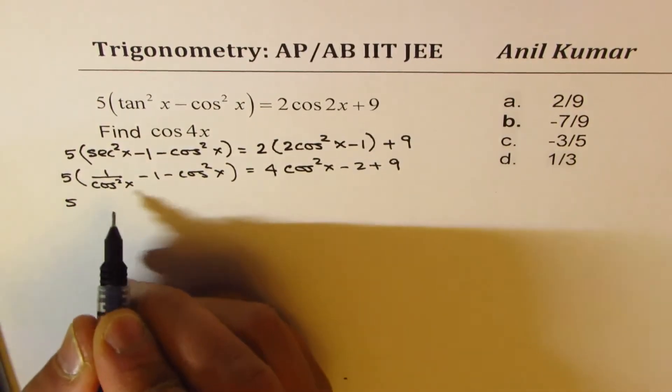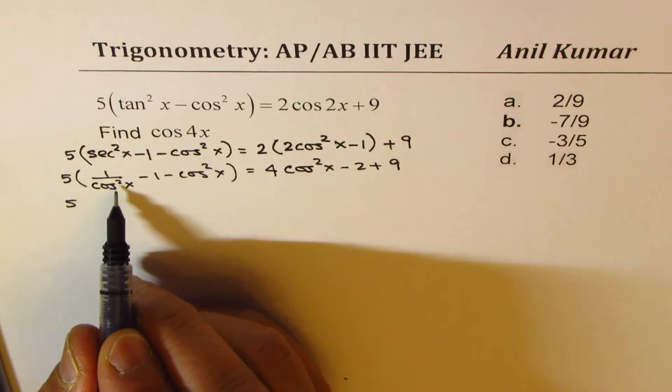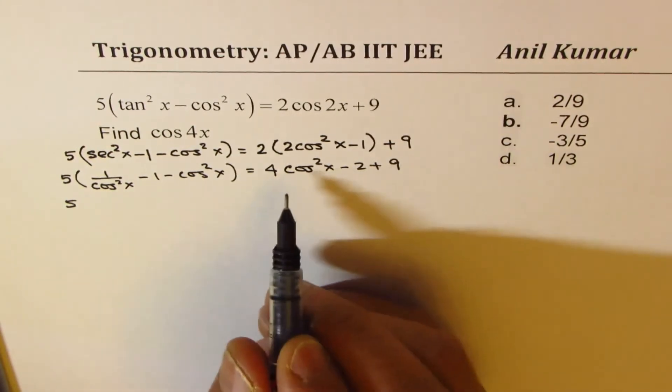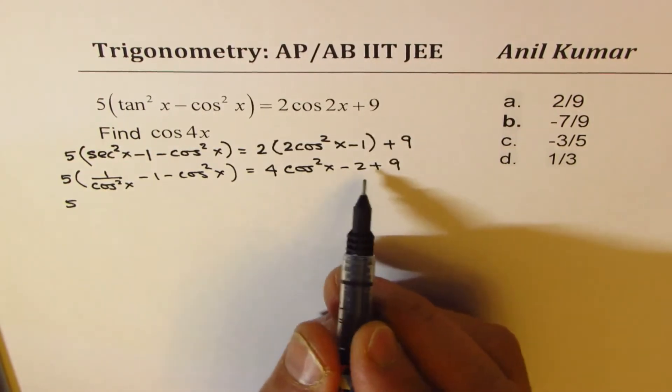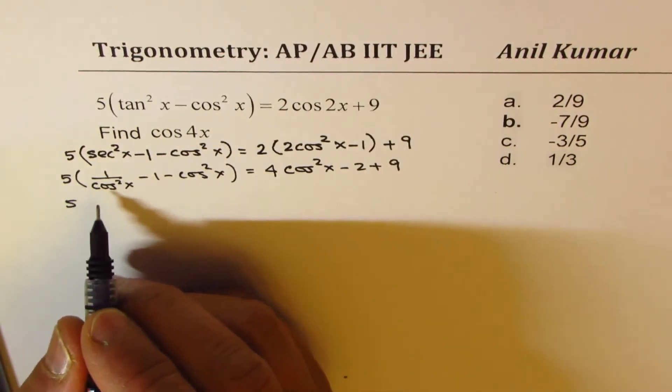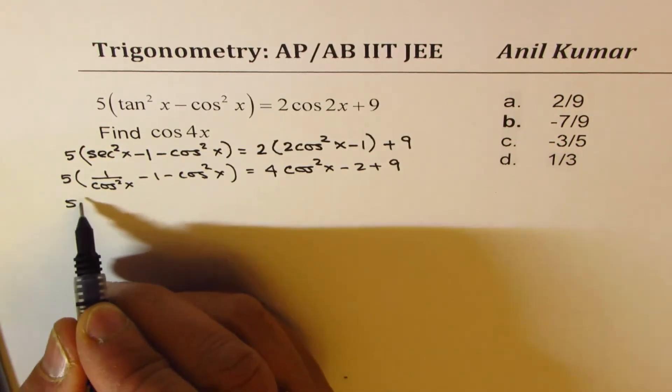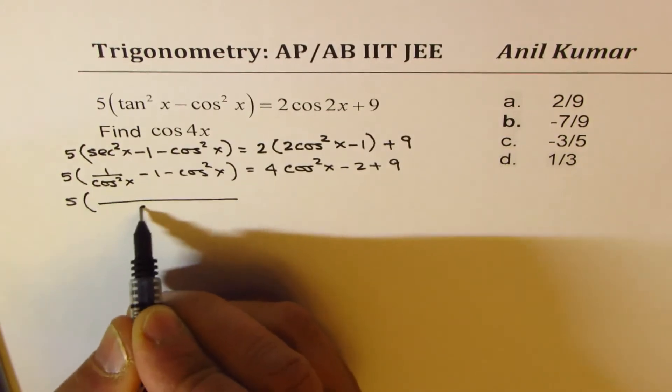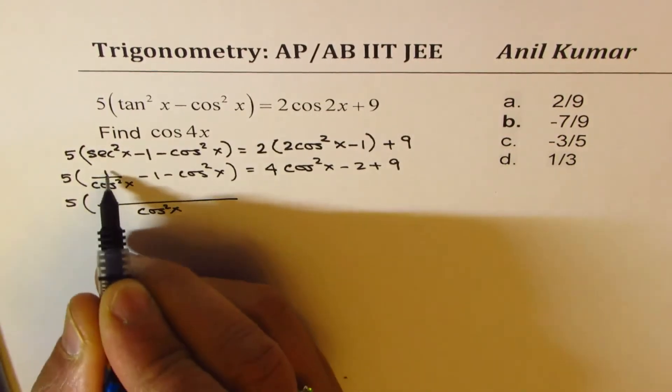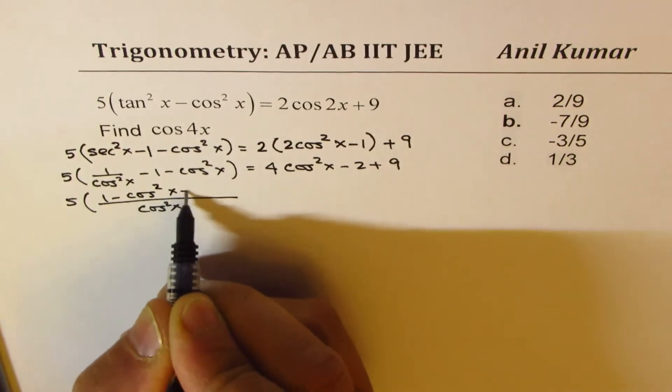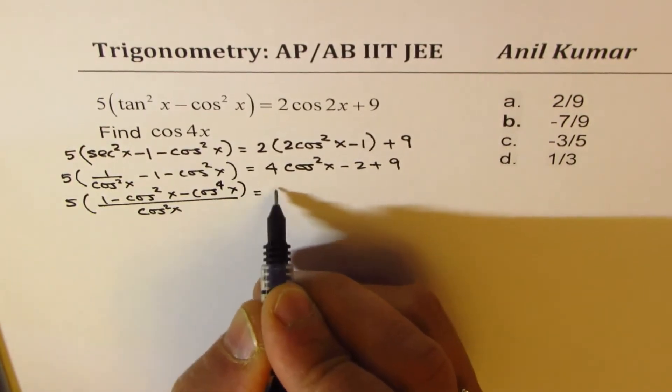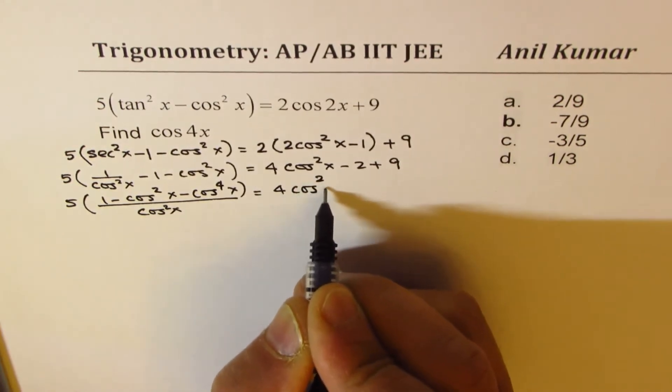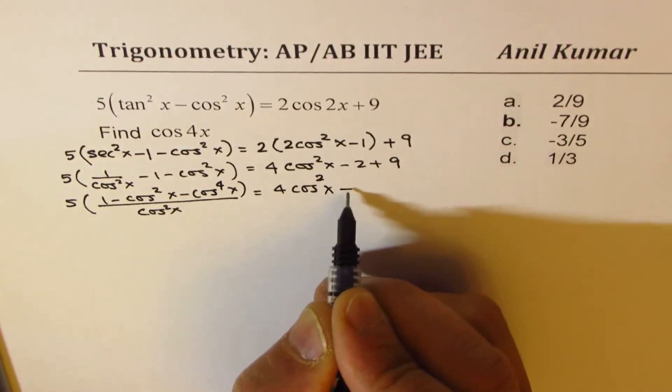Now, we can multiply by cos square x both the sides. Or let's take common denominator first. So we'll take common denominator of cos square x. We get 1 minus cos square x minus cos to the power of 4x equals to 4 cos square x plus 7.